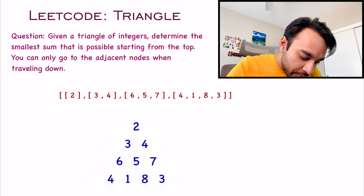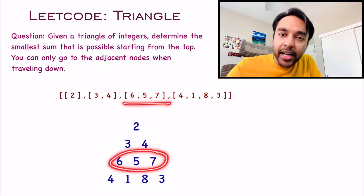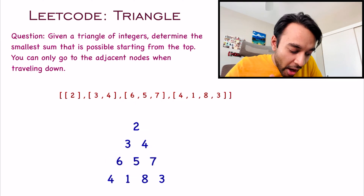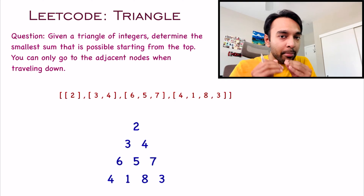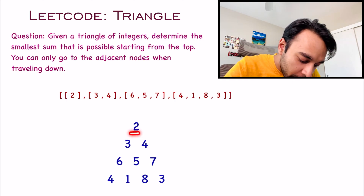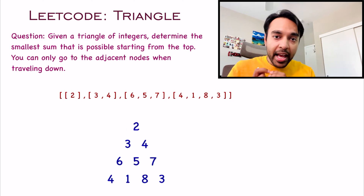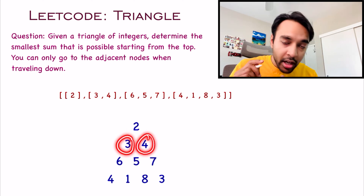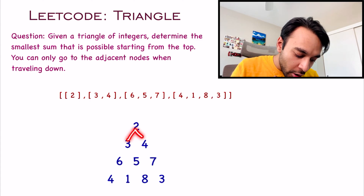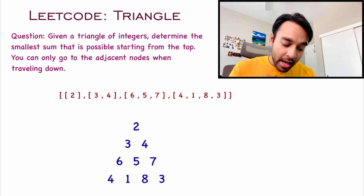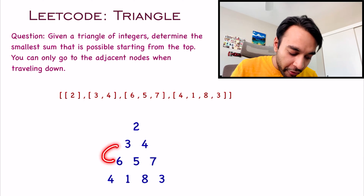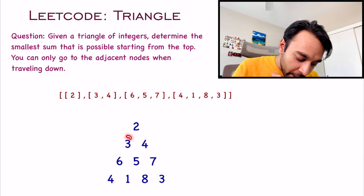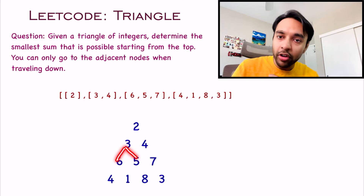The first element is 2. Then in the next level you have 3 and 4. In the next level you have 6, 5, 7 and so on. Now you have to find the minimum sum starting from the top. You start from the top and then you can only go to one of the adjacent nodes. So when you are starting from 2, you can either go to 3 or you can go to 4.